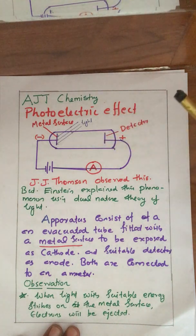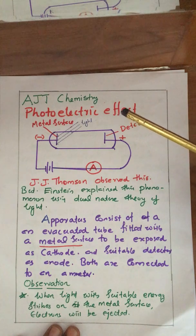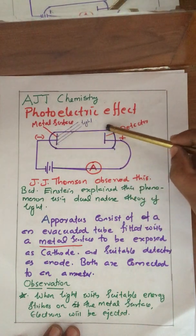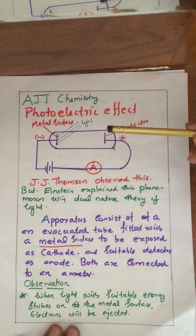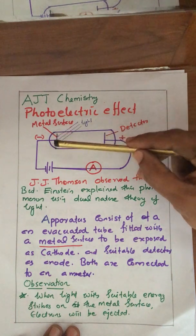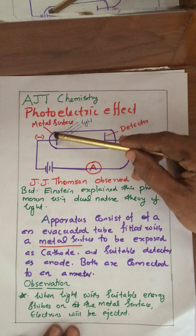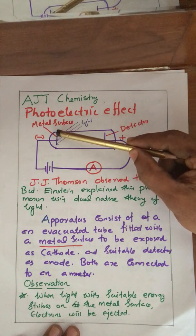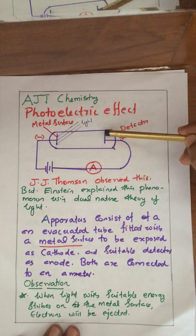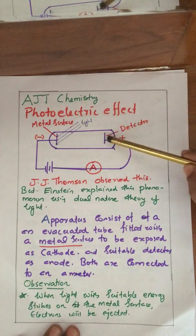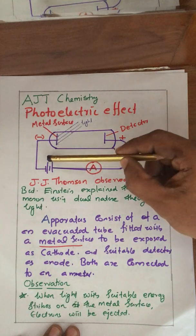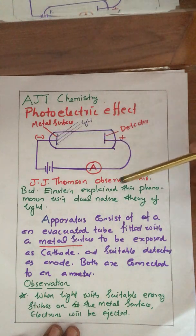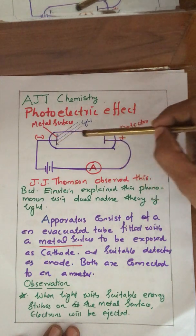Now look at this phenomenon. First of all, we can look at what equipment is used. It is an evacuated glass tube. There is one electrode connected to the negative terminal — we call it the cathode. This is a metal surface; we most probably use alkali metals. This is the detector electrode. These two electrodes are connected through an ammeter and a battery. There will be no electricity flowing through this circuit because this part is insulated.